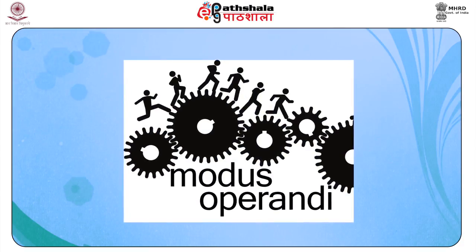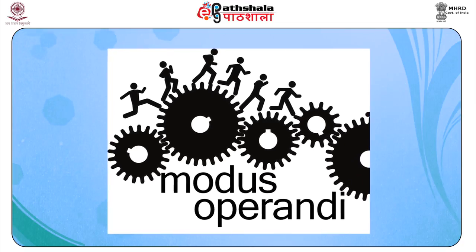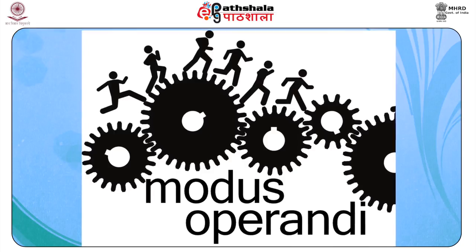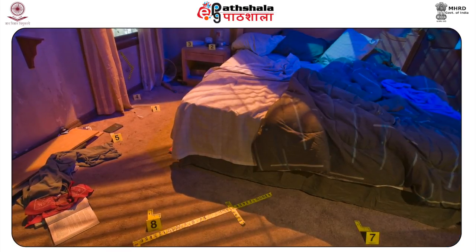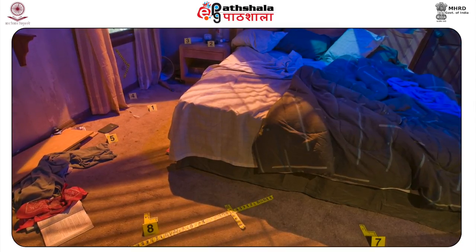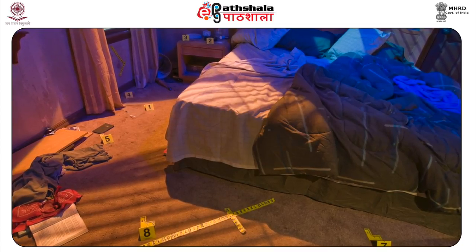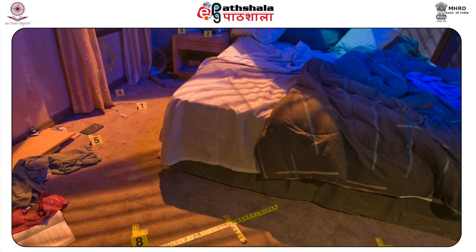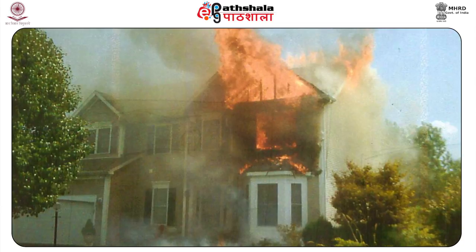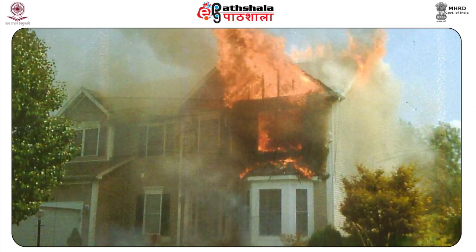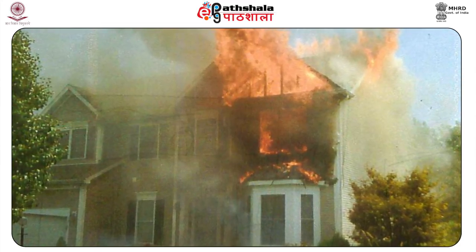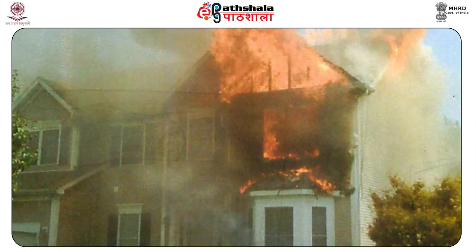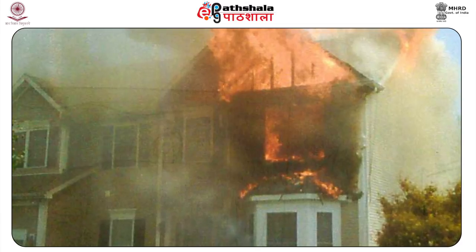Many criminals or gangs have a particular modus operandi — a characteristic way of committing a crime. Physical evidence can help establish a modus operandi. In the case of burglary, the means used to gain entry, tools used, types of items taken, and other tell-tale signs such as urine or footwear left behind are all important. In cases of arson, the type of accelerant used and the way fires were initiated constitute physical evidence helping establish the pattern or signature of the arsonist. Cases treated separately can sometimes be connected by documentation of similar modus operandi.